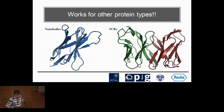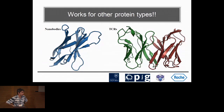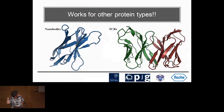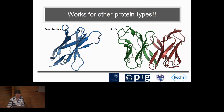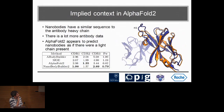We also tried it on different types of proteins like TCRs and nanobodies, and it works too. For TCRs it does basically as well as AlphaFold-Multimer, and for nanobodies it's actually a little bit better, which is pretty cool. For CDRH3 on nanobodies it does slightly better.